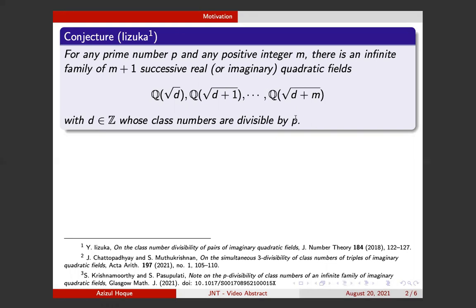On the other hand, the main result in this paper of Iizuka gives a proof of this conjecture for imaginary quadratic fields in the case p equals 3 and m equals 1.